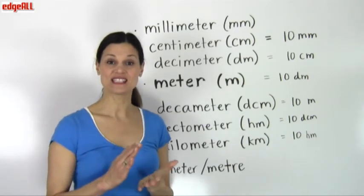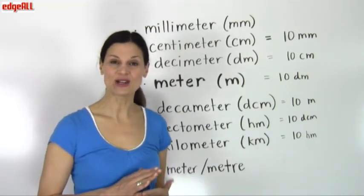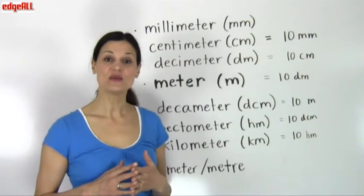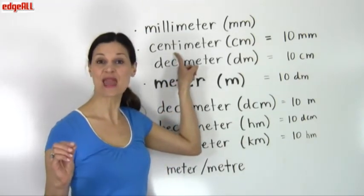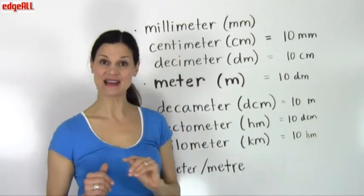To measure slightly bigger distances or slightly larger lengths you would use centimeters. So for example the edge of a piece of paper or even the height of your bike.